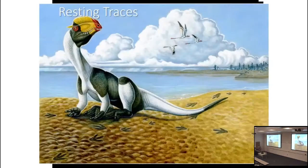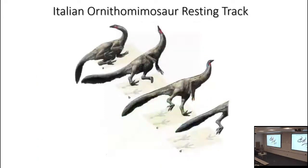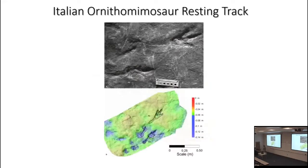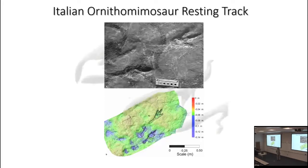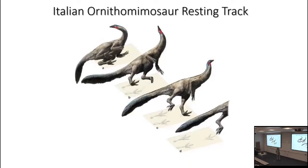That's kind of cool. There's a restoration of this dilophosaur sitting down on the ground. It's not the only dinosaur resting trace — here's a resting trace from an Italian ornithomimosaur, with a restoration of how that track formed. When we talk about pterosaurs later on, we actually have a pterosaur landing track, which is really cool.